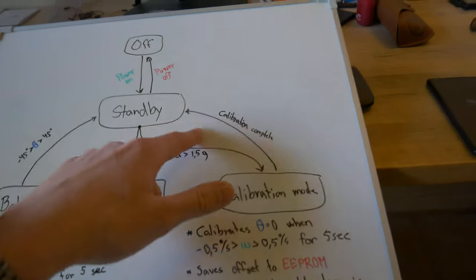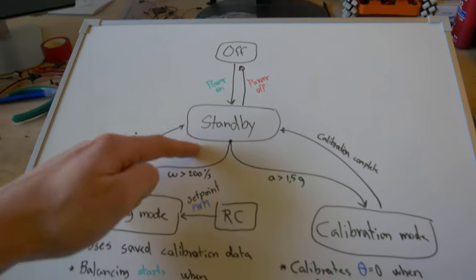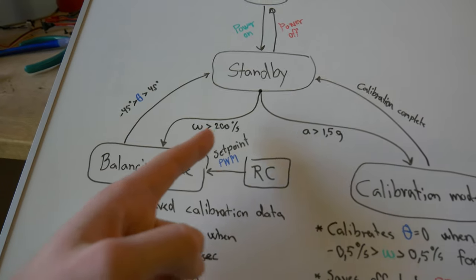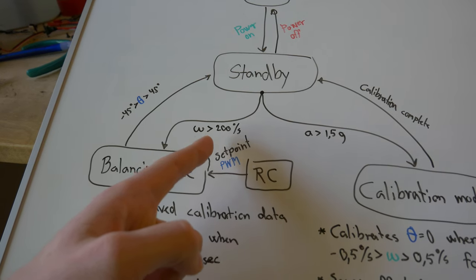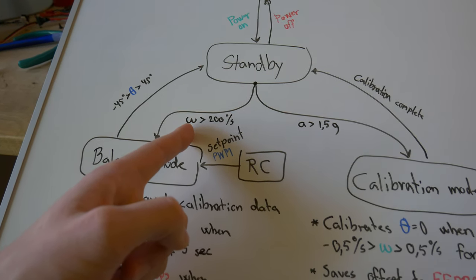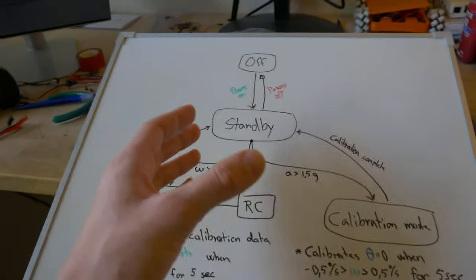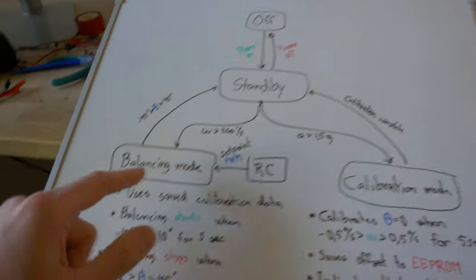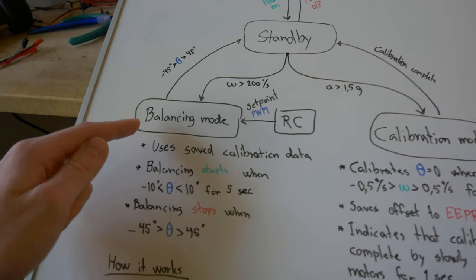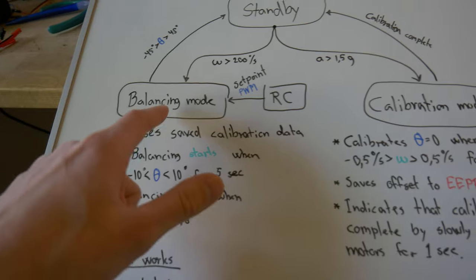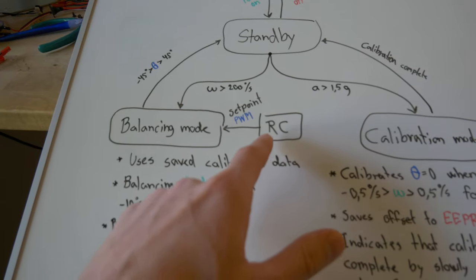Then it's going to indicate that the calibration is complete by slowly rotating the motors for one second. When the calibration is complete, it's going to go back into standby mode. Then to go into balancing mode, the rotational velocity needs to exceed 200 degrees per second.